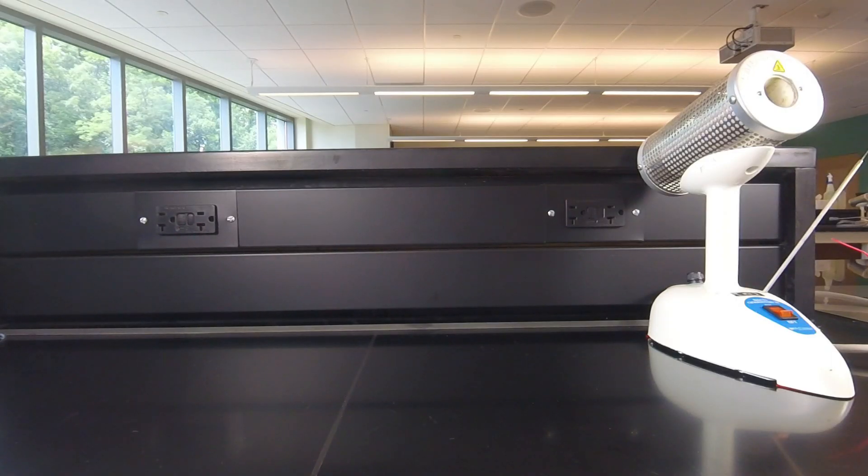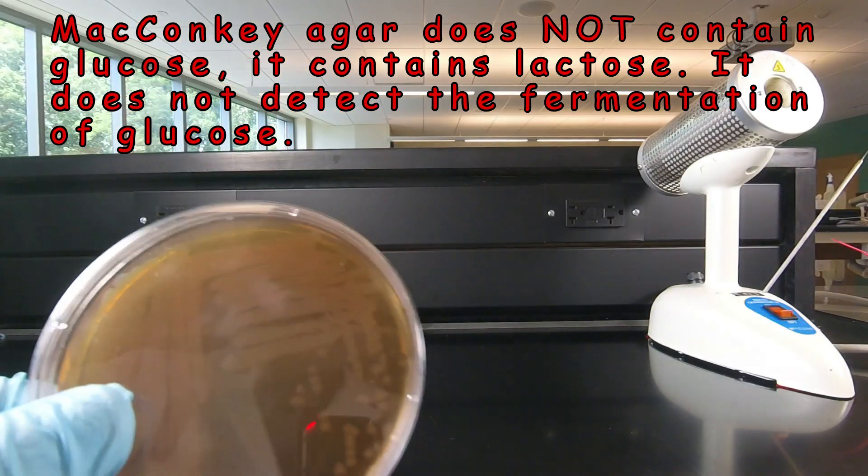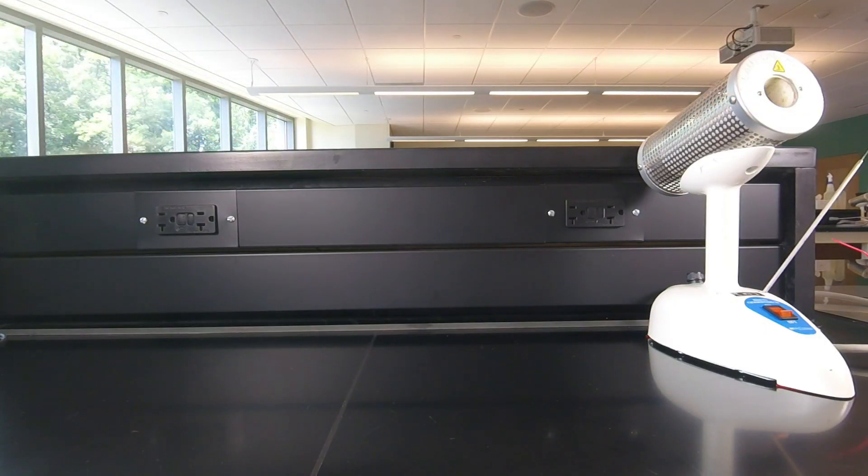One thing that's occasionally confusing to students is that keep in mind that we're differentiating glucose-fermenting gram-negative bacilli, that is the Enterobacteriaceae, from glucose-non-fermenting gram-negative bacilli such as Pseudomonas. Now in that case we're determining whether or not they ferment glucose. Glucose is not found in the McConkey agar. Lactose is present. So we can have no fermentation on the McConkey agar, but it could still easily be one of the Enterobacteriaceae. Some of the Enterobacteriaceae ferment lactose, some do not.